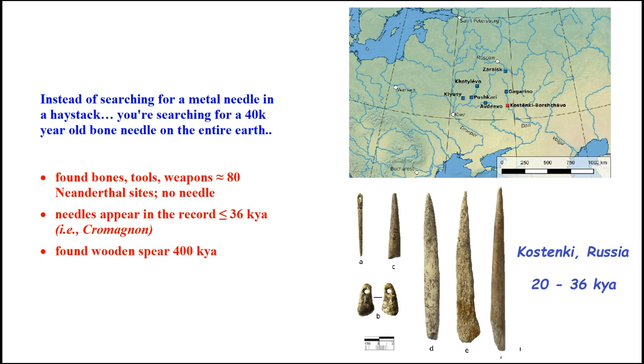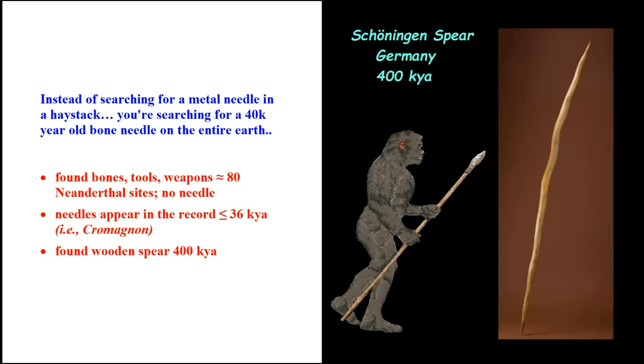They found a wooden spear 400,000 years ago. That's this little thing here, the Schöningen spear in Germany. And so it's made out of wood, and yeah, wood does tend to survive sometimes under certain conditions. If this survived, why didn't the needle survive 40,000 years ago. So we're talking about 10 times as far back, and it's there, and we don't find a needle 40,000 years ago.